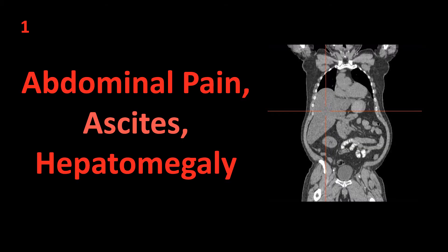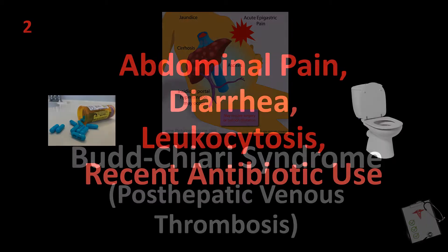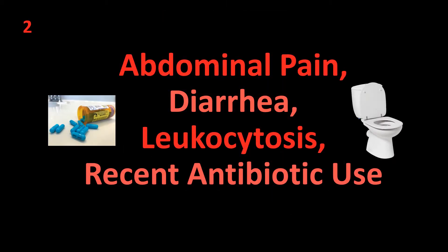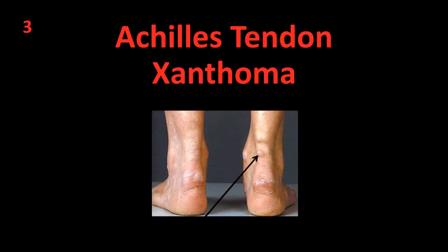Number 1: Abdominal pain, ascites, hepatomegaly. Answer: Budd-Chiari syndrome — post-hepatic venous thrombosis. Number 2: Abdominal pain, diarrhea, leukocytosis, recent antibiotic use. Answer: Clostridium difficile infection.